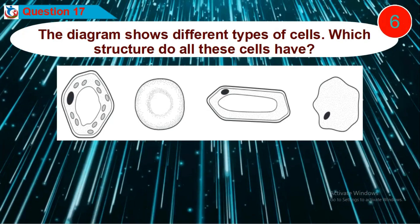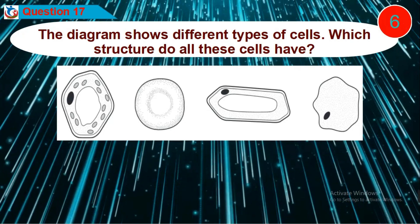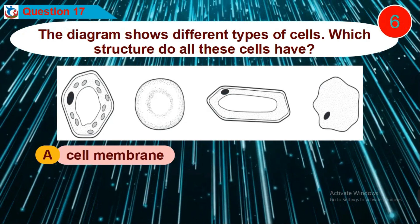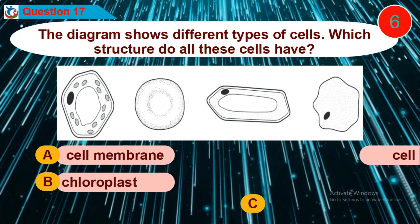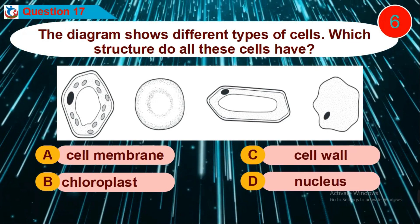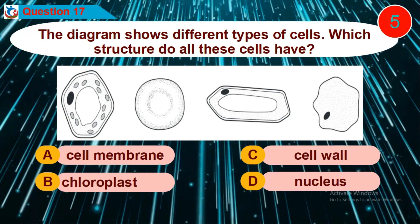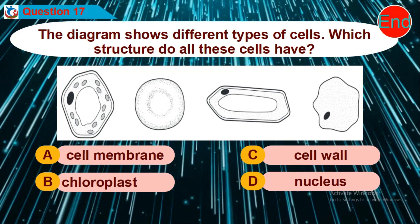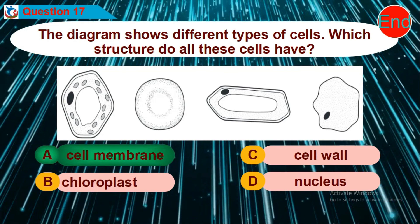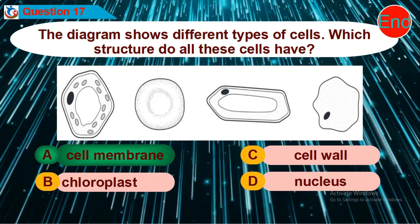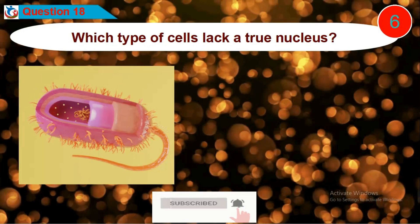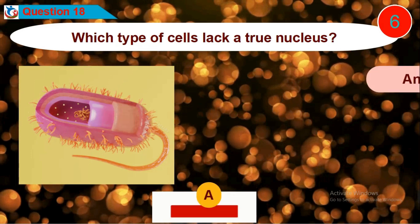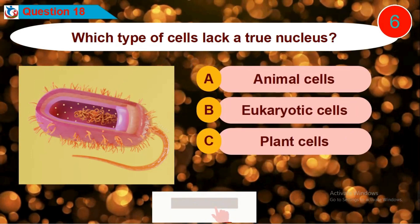Question 17: The diagram shows different types of cells. Which structure do all these cells have? Is it option A, B, C, or D? Question 18: Which type of cells lack a true nucleus? Is it option A, B, C, or D?